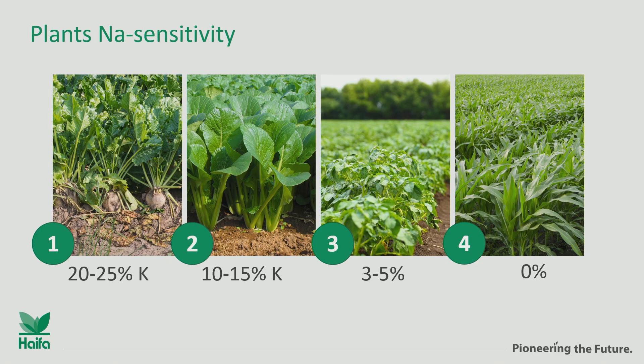In the literature, you can find four different groups of plants that give different responses to sodium. The first group - for example sugar beet or beet roots - can tolerate 20% sodium of the total potassium demand. The second group can accept 10-15% of sodium of the total potassium demand, and there is, for example, spinach or broccoli.